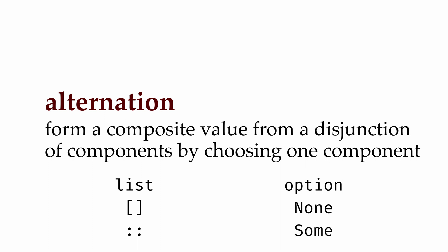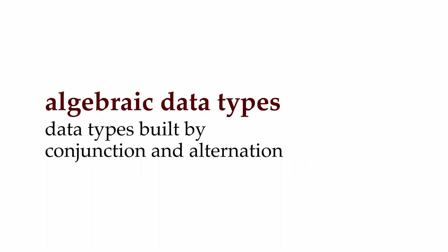These are all what we call algebraic data types — data types that are built using conjunction and alternation. Lists, tuples, and option types are all built-in algebraic data types, but OCaml also gives us the ability to construct our own algebraic data types.